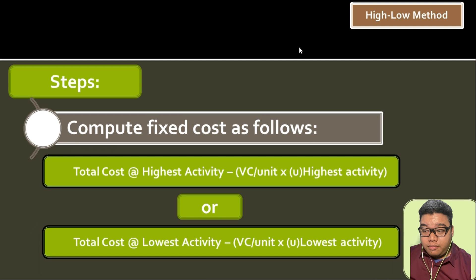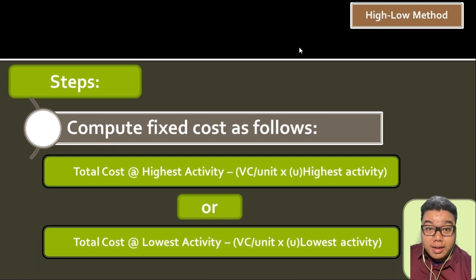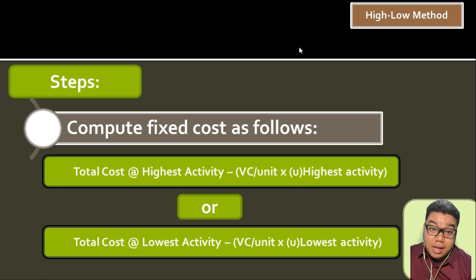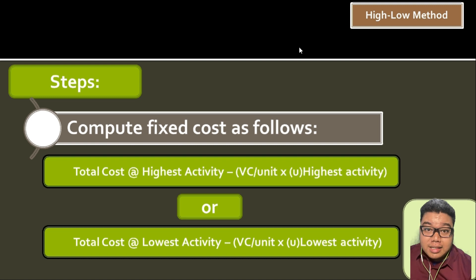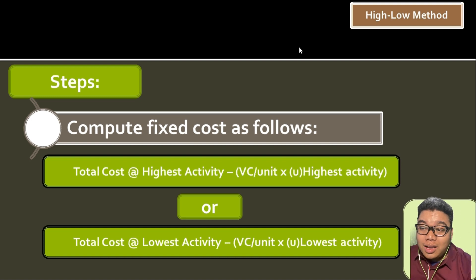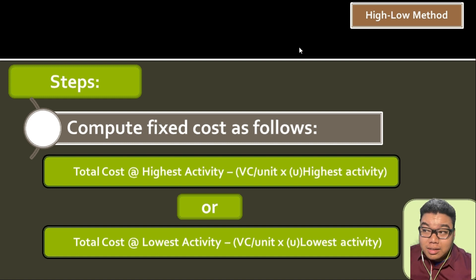The advantage of the High-Low Method is that it is straightforward and simple to use. The disadvantage is that it only recognizes two points in the set of observations. If the relationship is not a straight line, we only consider the highest and lowest activity levels and connect a line between them.